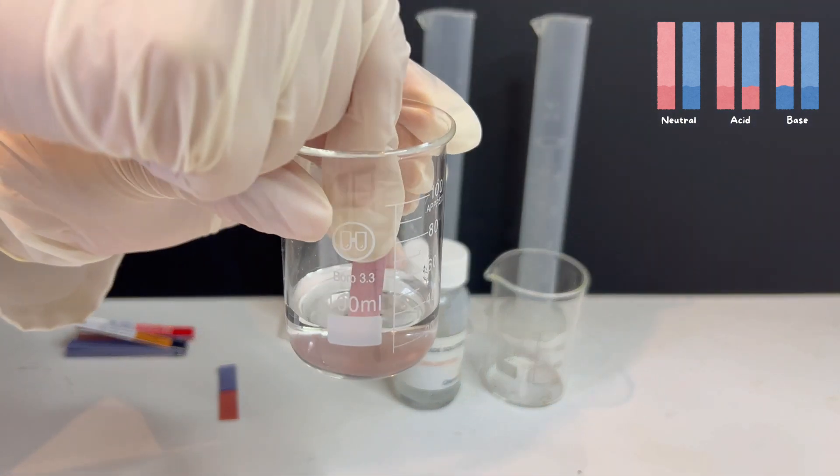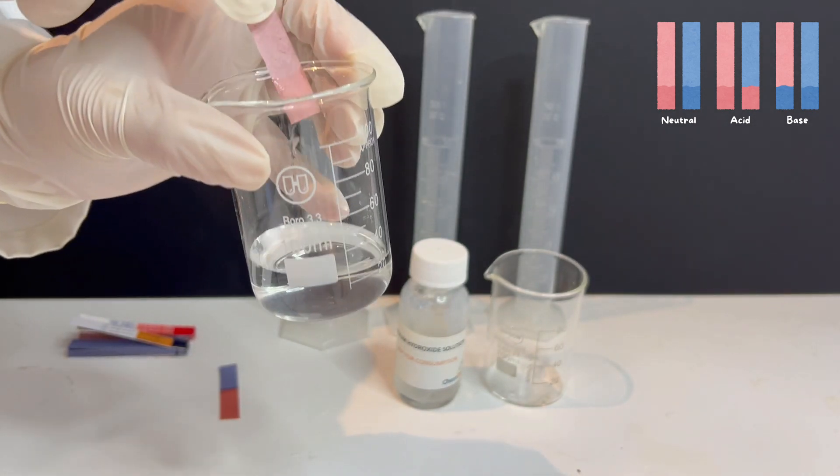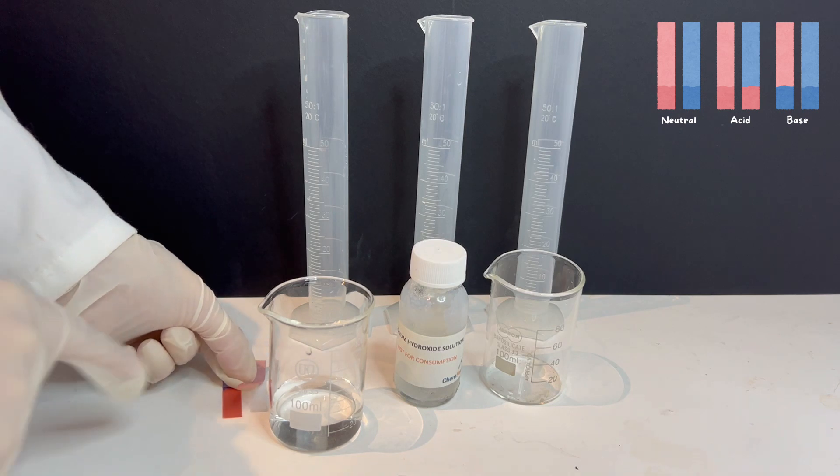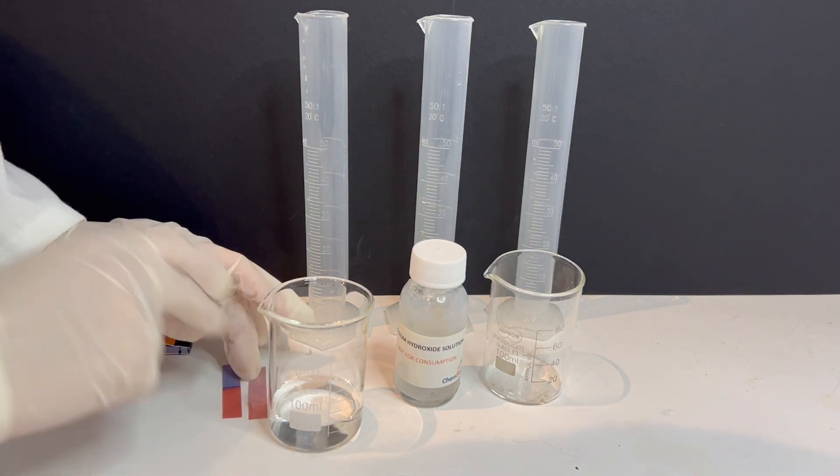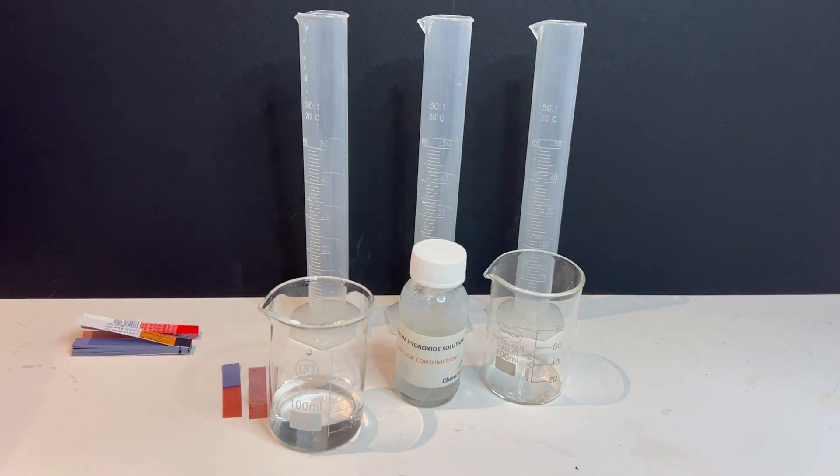Now, I will test the red litmus paper. I dip the red strip into the same vinegar solution. This time, there is no real color change. It stays red. That's because red litmus already shows the acidic form of the indicator. So acids don't change its color any further.